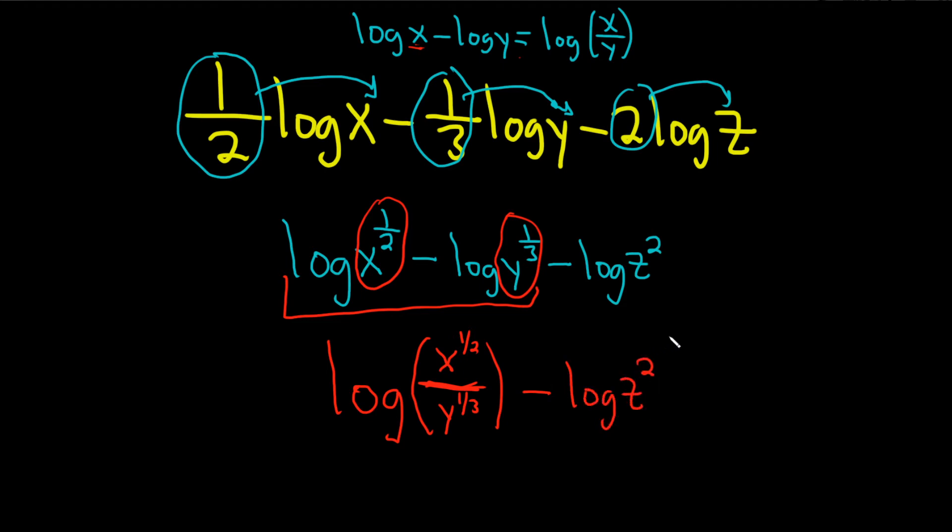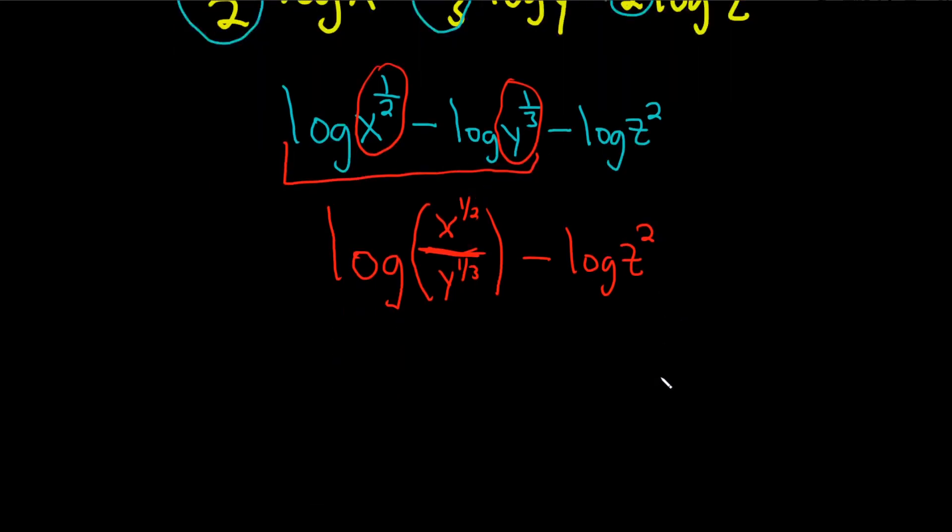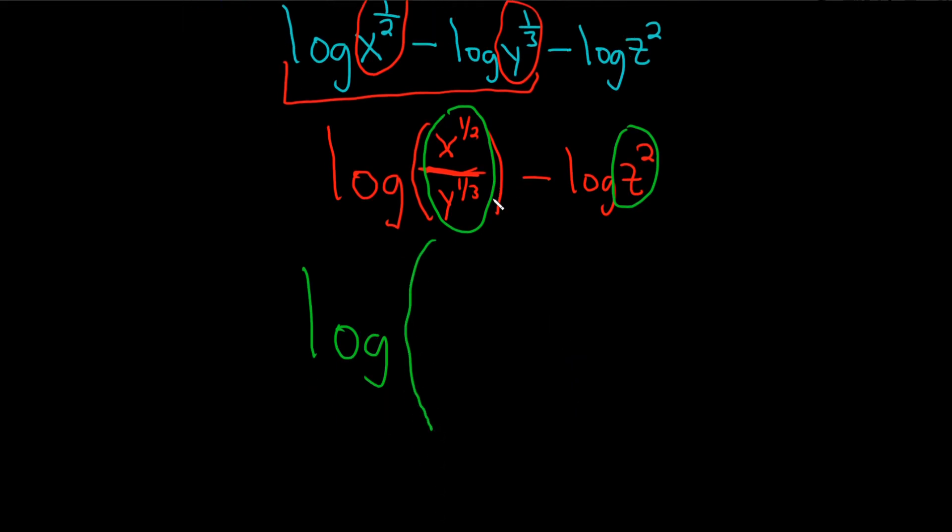Okay, so now let's go ahead and finish this up. So we're going to do it again. So it'll be log of this piece divided by this piece. So it's the top piece, x to the one-half over y to the one-third. And this is in parentheses. And this is divided by z squared.